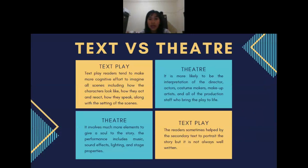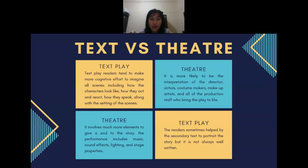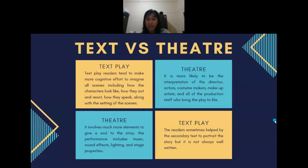Now let me explain about the difference between text and theater. For text play readers, they tend to make more cognitive effort to imagine all scenes, including how the characters look, how they act and react, and how they speak along with the setting. So for text play readers, we must put more effort to understand the storyline. Sometimes they are helped by the secondary text to portray the story, but it is not always well written, and it is not always mandatory to have secondary text in a text play.